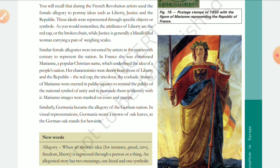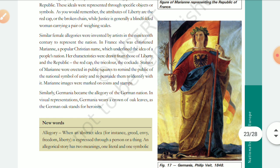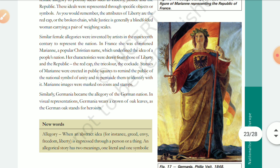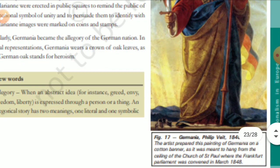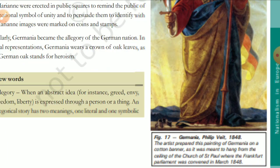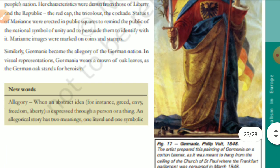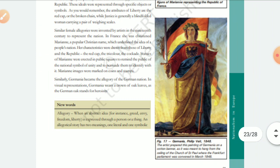In the picture of Germania, we find many symbols like a sword, herbs of a tree, oak leaves, a tricolor flag, sun rays, and in the corner we can see broken chains, which are the symbol of freedom.